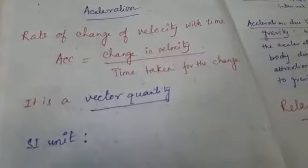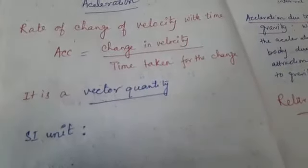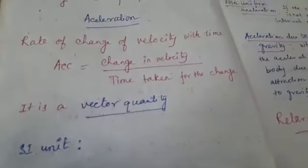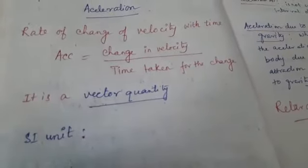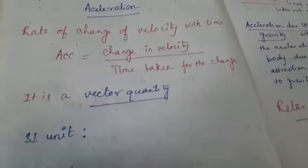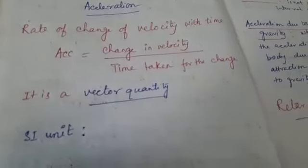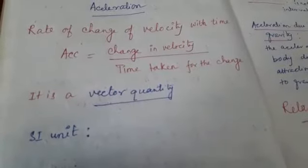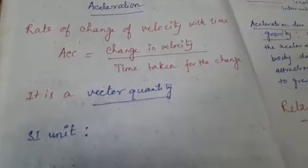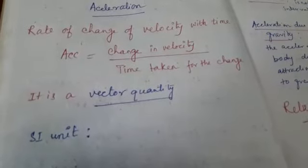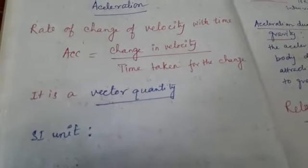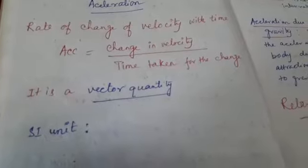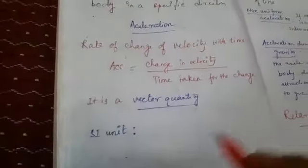It is a vector quantity. The SI unit of acceleration — you will not mug up these units, you will always try to derive them. See the formula: acceleration is change in velocity divided by time, so it is velocity divided by time, and the unit will be velocity divided by time.